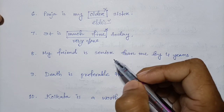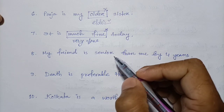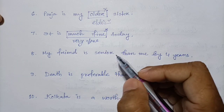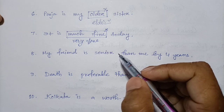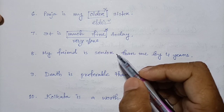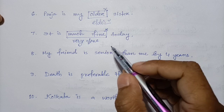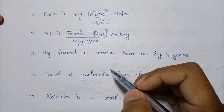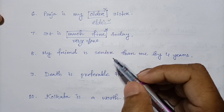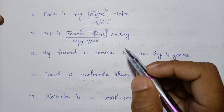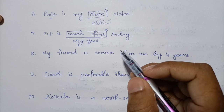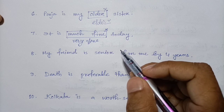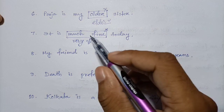There are 18 rules of correct use of adjectives. A PDF covering these rules is available in the video description. Download the PDF to make learning easier.